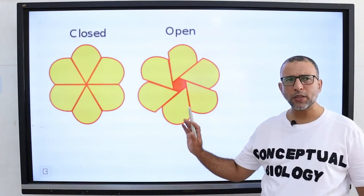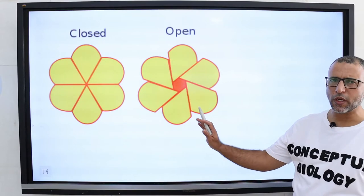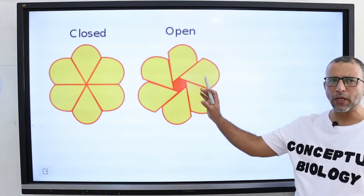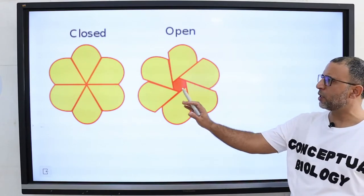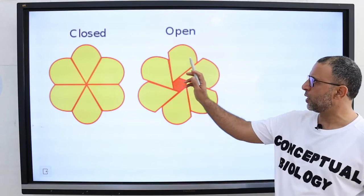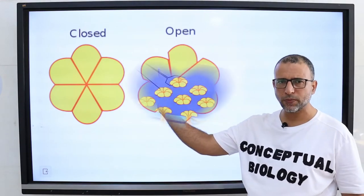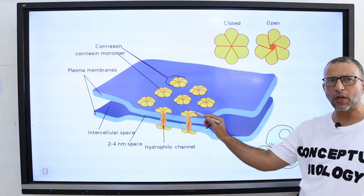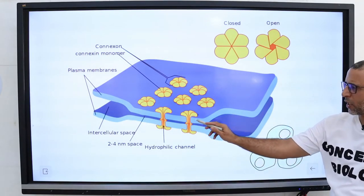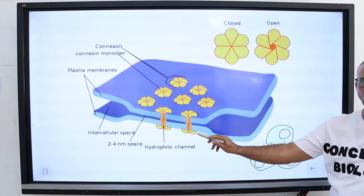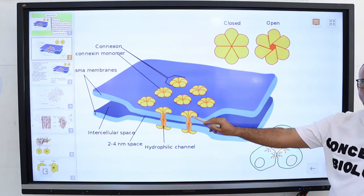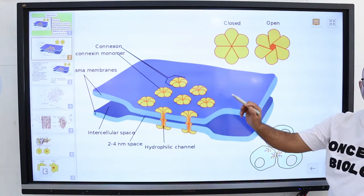In both vertebrates and invertebrates, the structure is formed by complexes of six identical transmembrane proteins. The proteins are arranged in a circle to create a channel through the plasma membrane that protrudes several nanometers from the cell surface.